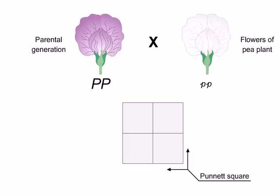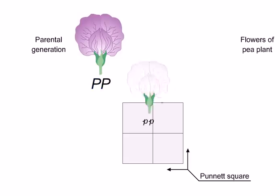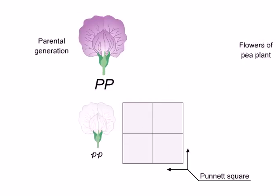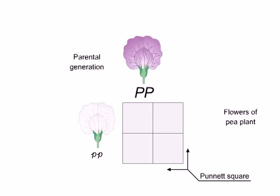In this first example, the plants being mated differ in just one trait. One plant is homozygous for the dominant purple flower allele of a gene. The other is homozygous for a recessive white flower allele. To show the mating, we arrange the parent plants along two sides of the square.